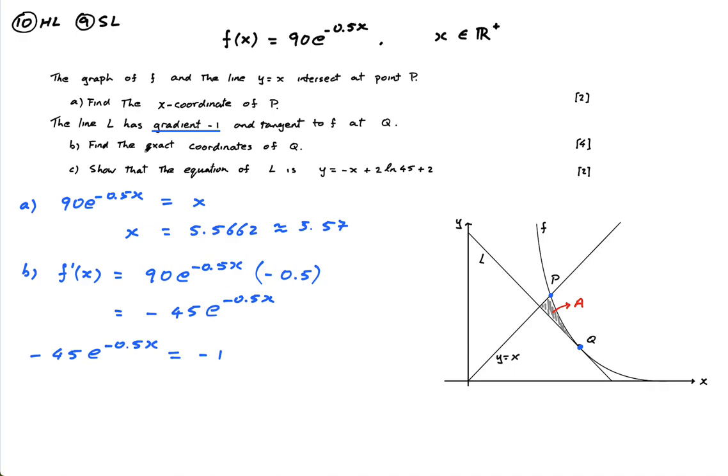Now note guys, he says find the exact coordinates of Q. Because he said you find the exact coordinates of Q, that's his way of saying you're not using the calculator here, you are going to show all your working. So this is going to become e to the minus 0.5x equals 1 over 45. So then minus 0.5x equals ln of 1 over 45.